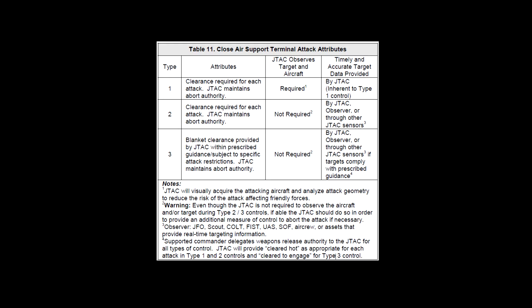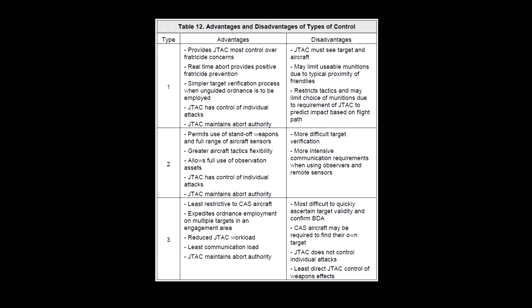Type 3 control is used when the JTAC requires the ability to provide clearance for multiple attacks within a single engagement subject to specific attack restrictions. Type 3 control does not require the JTAC to visually acquire the aircraft or the target. However, all targeting data must be coordinated through the JTAC or the ground commander.